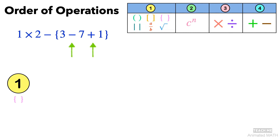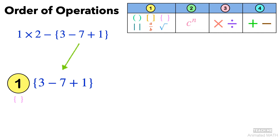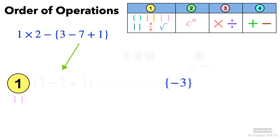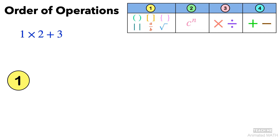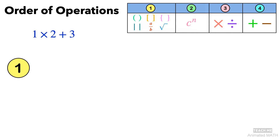We work outwards again to simplify the expression in the curly braces. Like earlier, we can go to Step 4: perform subtraction or addition from left to right. This gives us negative 3. Now our whole expression is 1 times 2 minus negative 3. Removing the curly braces, our expression is now 1 times 2 plus 3.